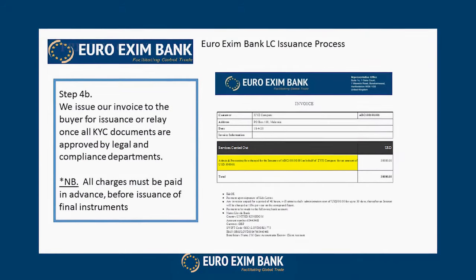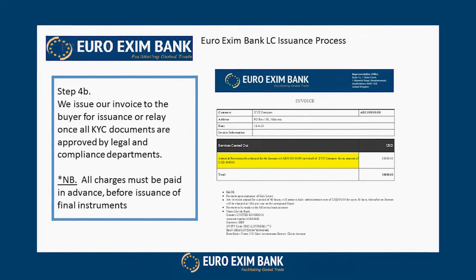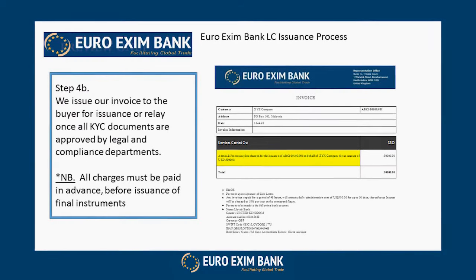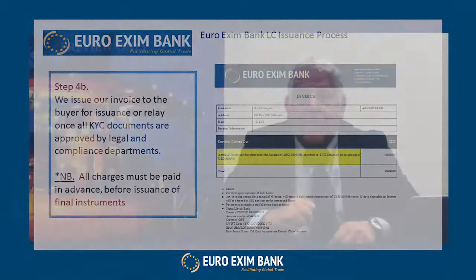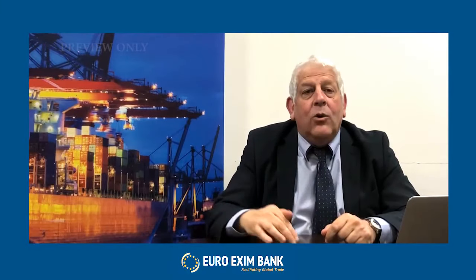In step four B, once we've been through the entire KYC process and have all the necessary documents including passports, and if everything checks out correctly, we will then issue our invoice for our fees. This could be for issuance of the instrument or relaying through a third party institution. If we take on the risk, the fees will be higher than if we're merely relaying without responsibility or liability. Our charges must be paid in advance in full before we commit to sending any messages across the SWIFT network.